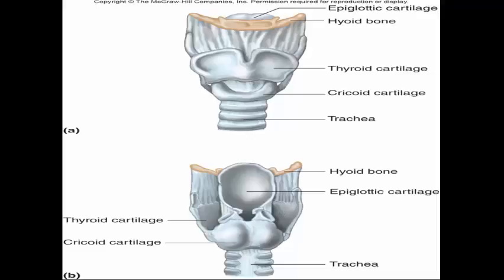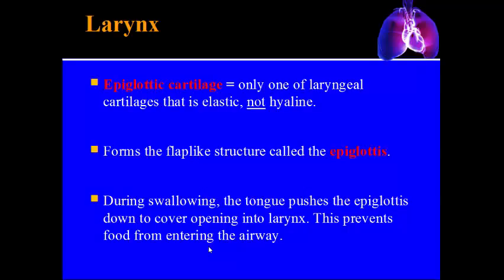Here's how the thyroid cartilage looks from the front and back — the part that juts out is the Adam's apple, but the whole structure is the thyroid cartilage. The second cartilage is the epiglottic cartilage, the only one in the larynx made of elastic cartilage rather than hyaline cartilage. It forms a flap-like structure called the epiglottis, which prevents food from going down into your lungs.